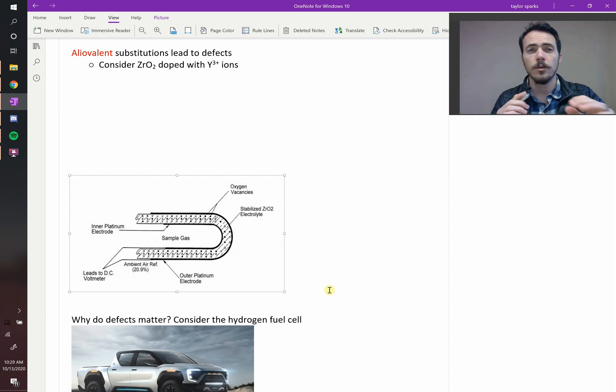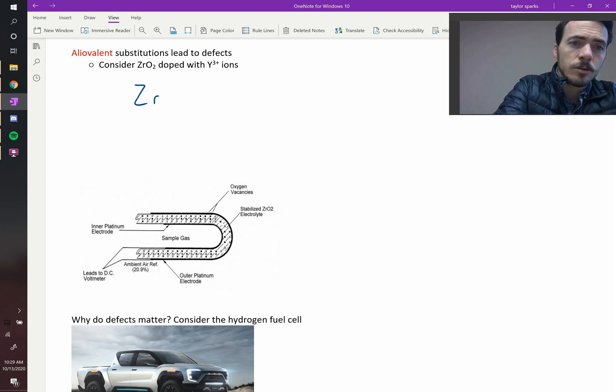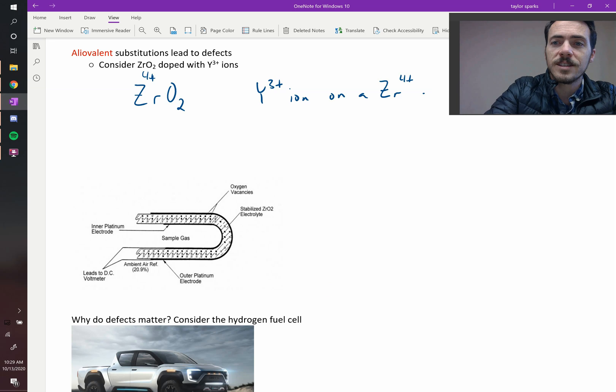So, let's do an example. How about zirconia, ZrO2? Since each oxygen is 2 minus, that means that your zirconium must be 4 plus, right? It's a 4 plus cation. So, the question is, what happens if we take out a zirconium atom and we put in an yttrium atom? And the yttrium atom is an yttria 3 plus ion. So we're putting an yttrium 3 plus ion on a zirconium 4 plus site.